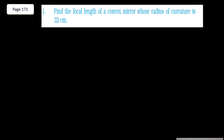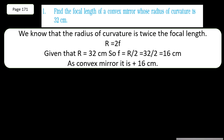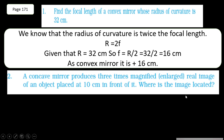The next question: find the focal length of a convex mirror whose radius of curvature is 32 cm. This uses the same formula: R = 2F, therefore F = R/2. So the answer is 32/2 = 16 cm. As it is a convex mirror, it should have a positive focal length according to the new Cartesian sign conventions.